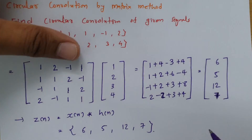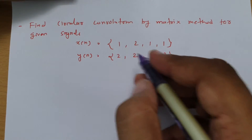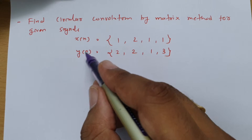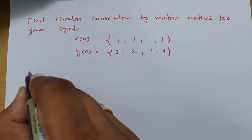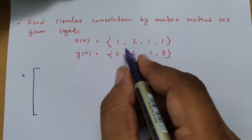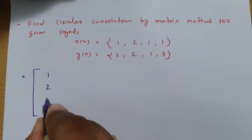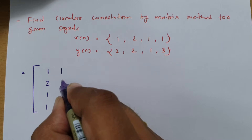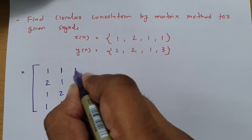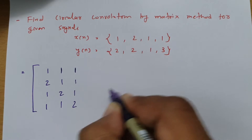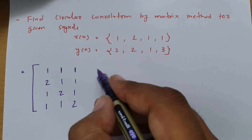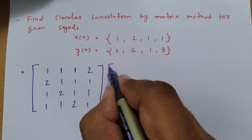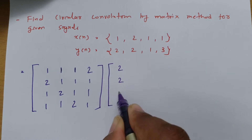Let us have one more problem to make it clearer. I will solve one more example using the matrix method. The question is: find the circular convolution by matrix method for the given signals. x of n is 1, 2, 1, 1 and y of n is 2, 2, 1, 3. Taking x of n to form the first matrix, the first column is 1, 2, 1, 1. Then circularly shifting: keep 1 here, write 1, 2, 1; keep 1, write 1, 1, 2; keep 2, write 1, 1, 1. The second column vector from y of n is 2, 2, 1, 3.